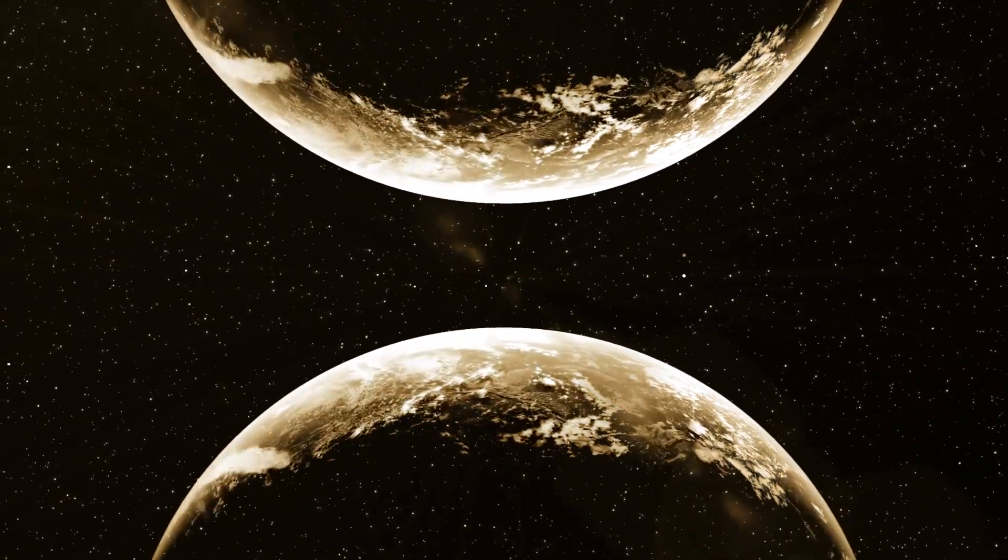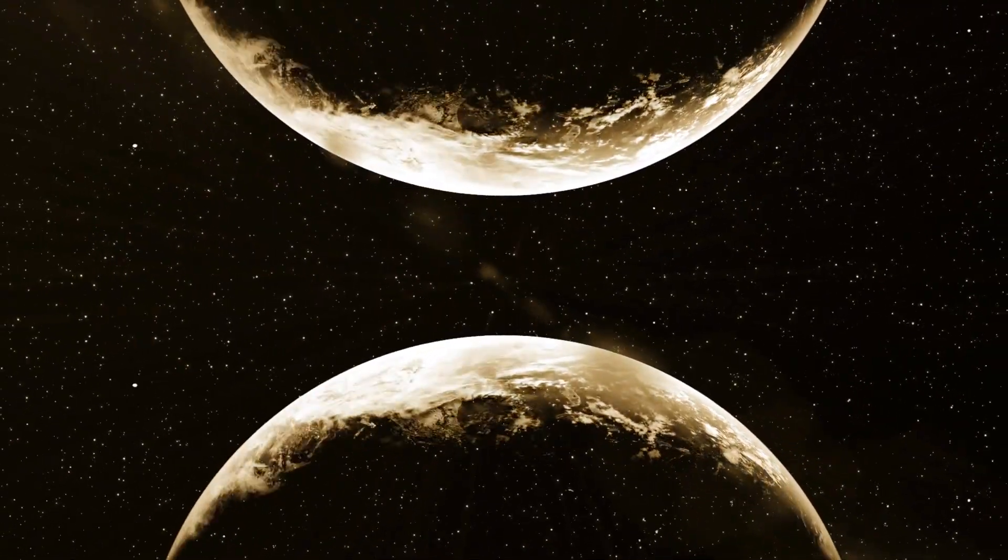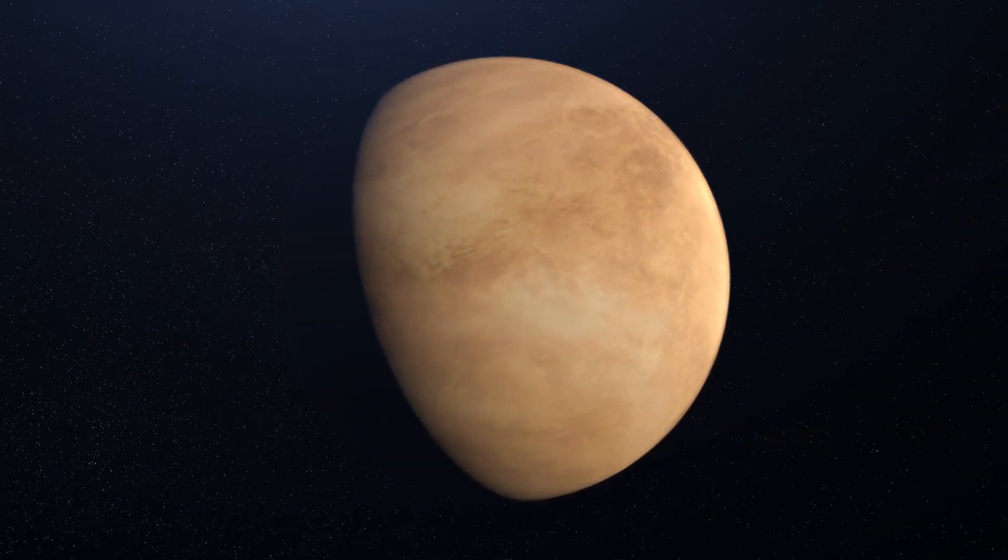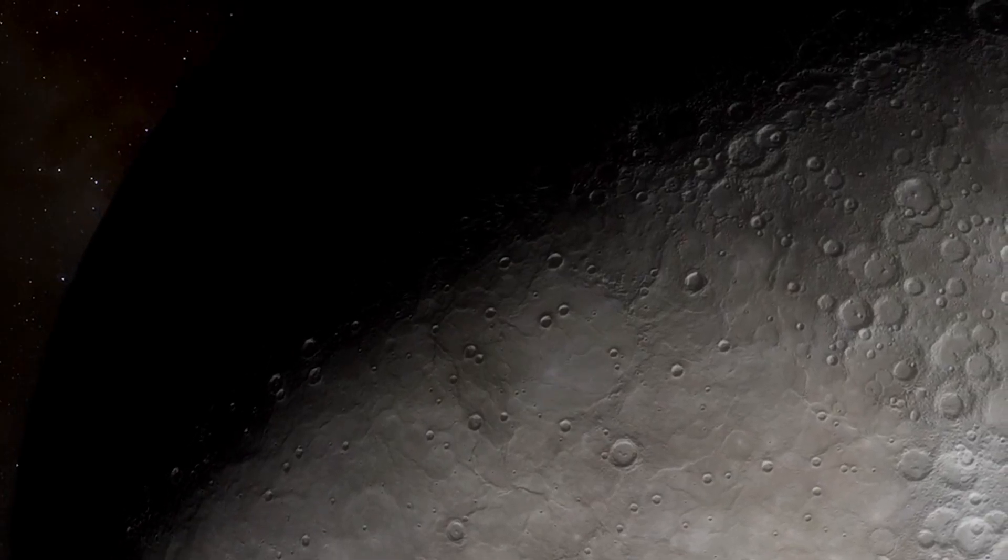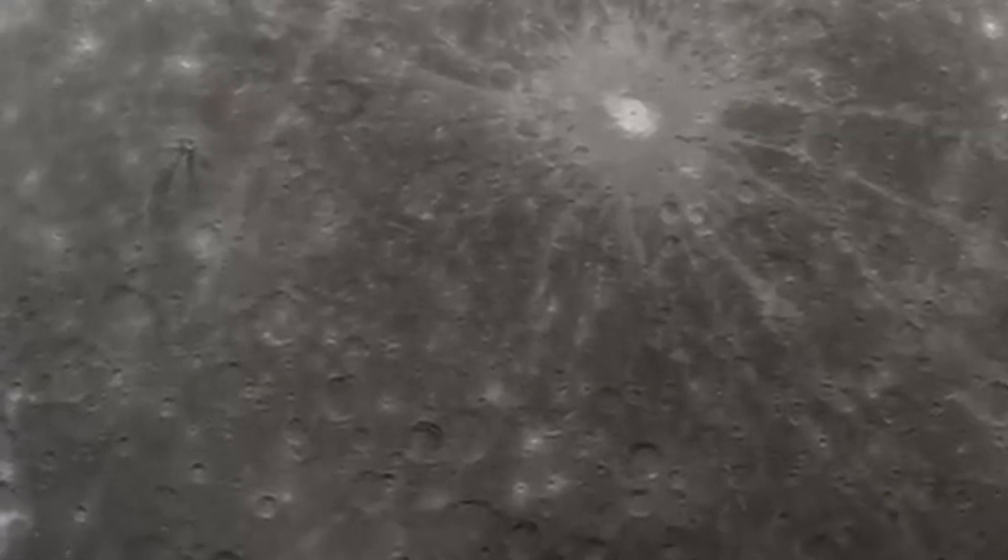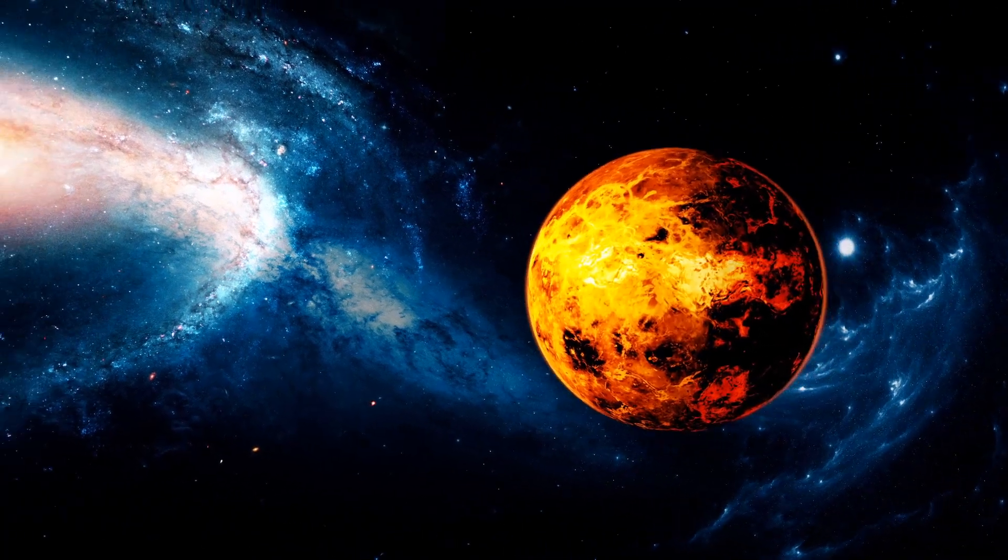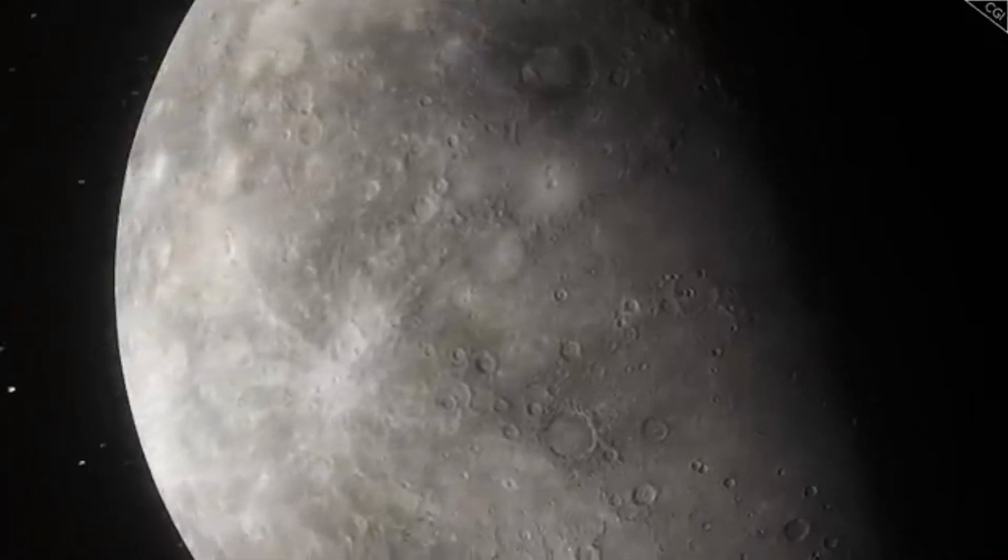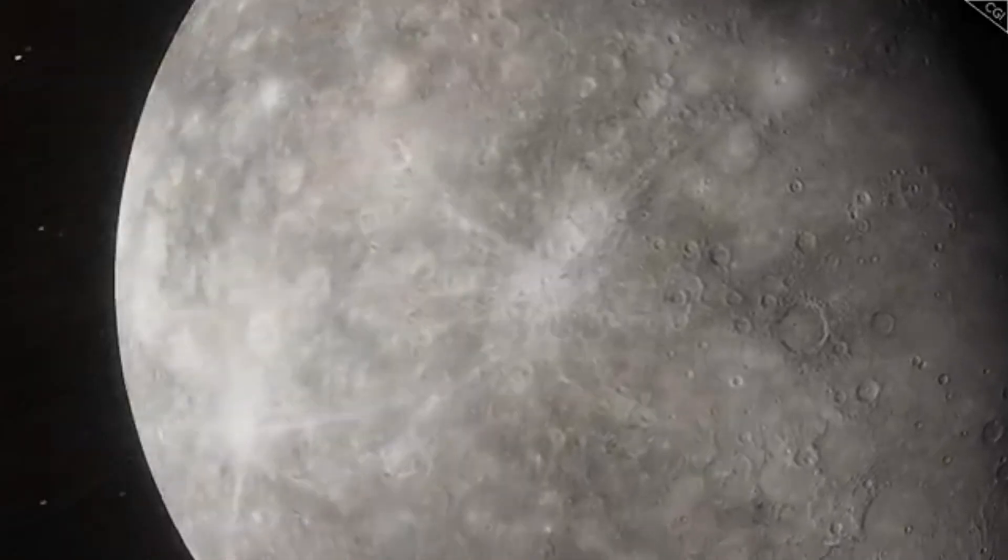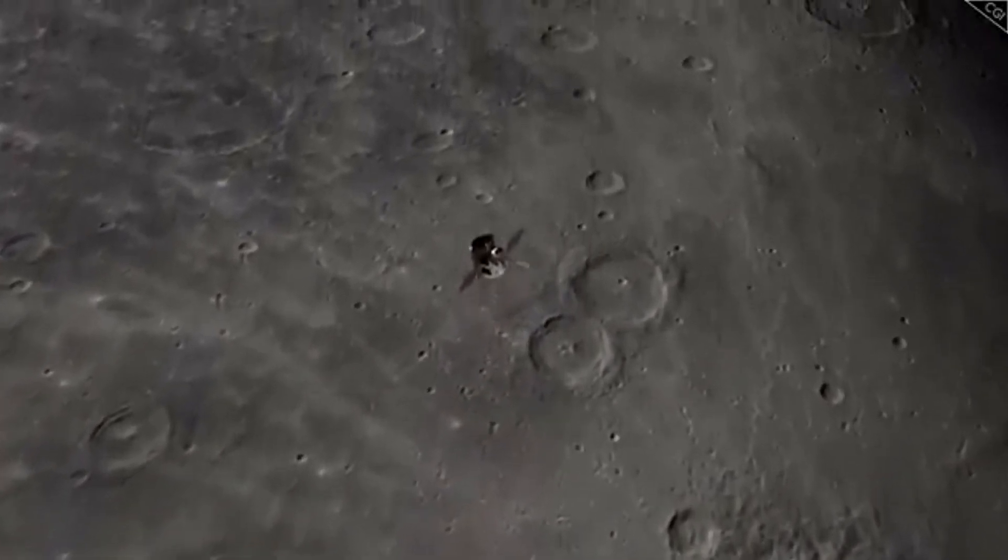Mercury's unusual magnetic field is yet another intriguing mystery. Unlike Venus and Mars, which lack global magnetic fields, Mercury possesses one that is about 1% as strong as Earth's. This surprising discovery made by NASA's Messenger mission challenged previous assumptions. Led by Dr. Catherine Johnson from the University of British Columbia, the research revealed that this anomaly may be due to the variable thickness of Mercury's outer shell, affecting how heat is transferred from its core.